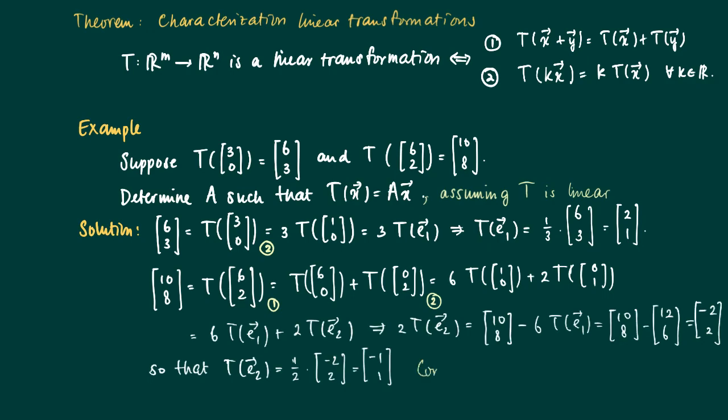So the conclusion is that the matrix for this linear transformation consists of two columns, T of E1 and T of E2. T of E1 being equal to [2,1] and T of E2 being equal to [-1,1]. So we get the matrix for this transformation equal to the 2x2 matrix with columns [2,1] and [-1,1].